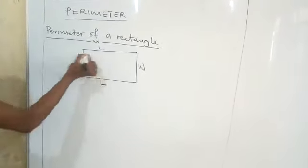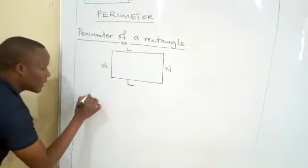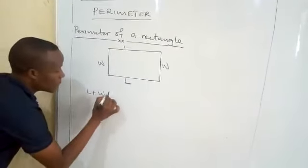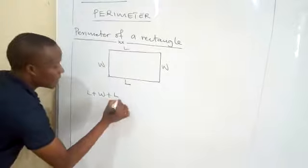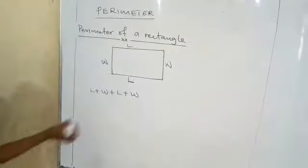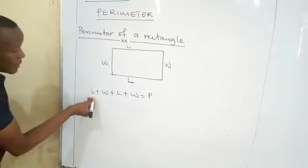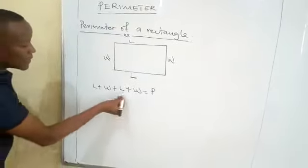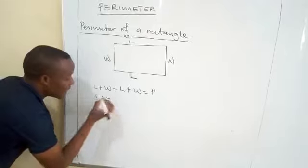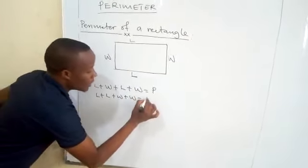It means if we need to measure the distance around this figure, you take length, plus width, plus length, plus width. Then let us add the same items: length plus length plus width plus width is equal to perimeter.